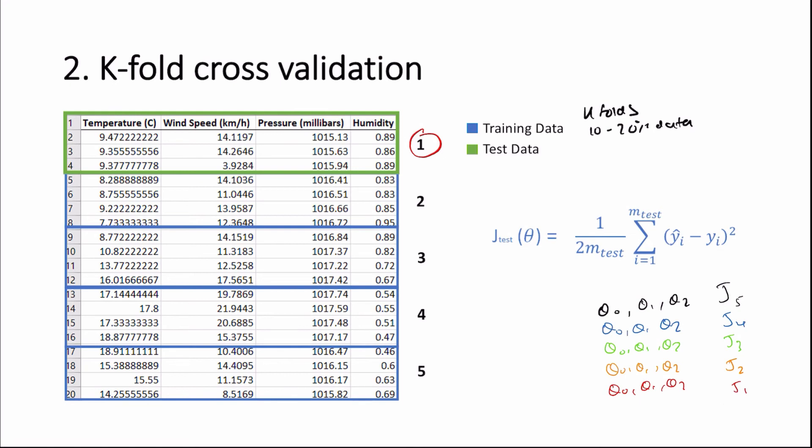And lastly, we take the mean value of all of our costs, and let's call this capital J. And we do the same with all of the parameters calculated to give us a final mean value of theta zero, theta one, and theta two. And we then use this capital J, which was the mean value of all of our costs, to evaluate our model and make improvements.